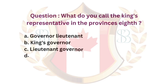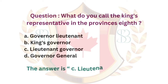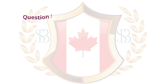Question. What do you call the king's representative in the provinces? a. Governor-Lieutenant. b. King's Governor. c. Lieutenant Governor. d. Governor-General. The answer is c. Lieutenant Governor.